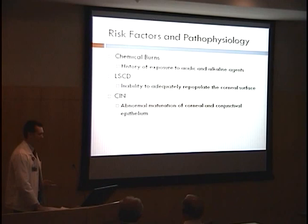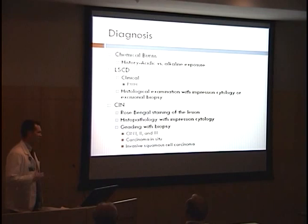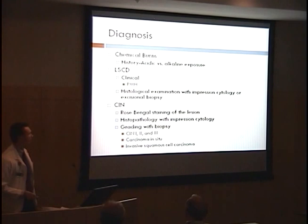How do you diagnose chemical burns? You need to know if there's a history or not. For limbal stem cell deficiency, the diagnosis can often be made clinically through past medical history — does the patient have an autoimmune disease like Stevens-Johnson syndrome or aniridia? If the diagnosis is in question, you can go to histological exam with impression cytology, and generally you'll see conjunctival goblet cells in the cornea, which was not present on our patient's impression cytology.